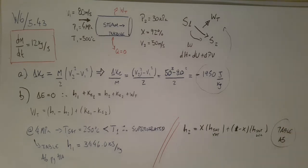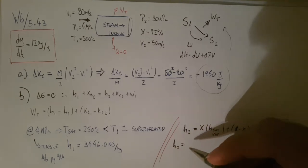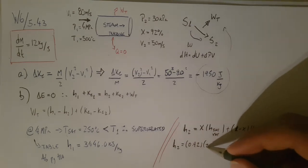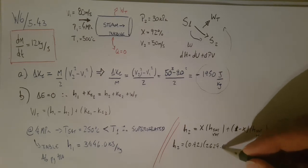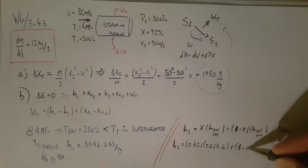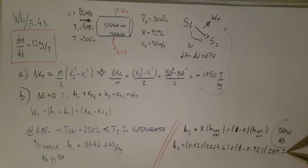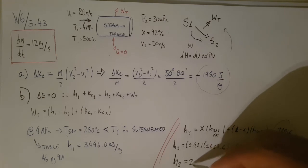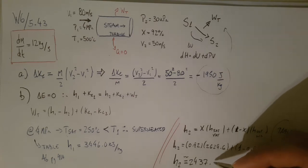And this is going to be H2 equals 0.92 times 2624.6 plus 1 minus 0.92 times, what is the liquid one, 289.27. Okay, so my H2, doing this math, is going to be approximately 2437.8 kilojoules per kilogram.